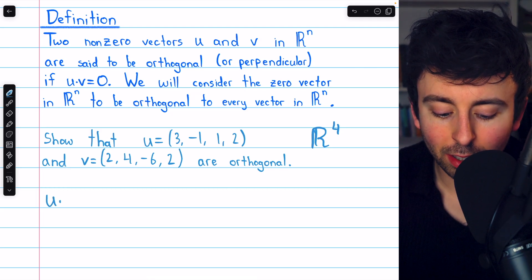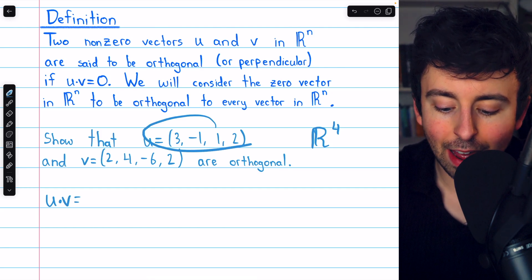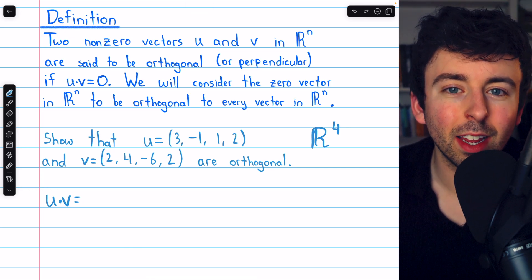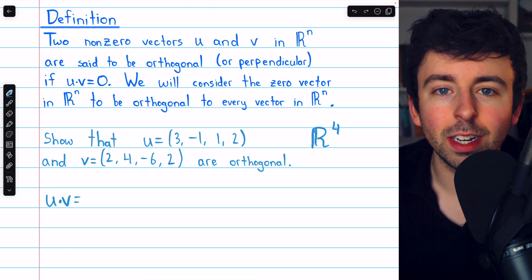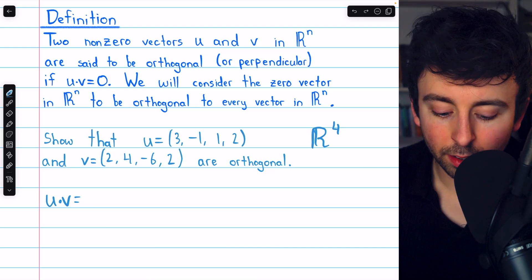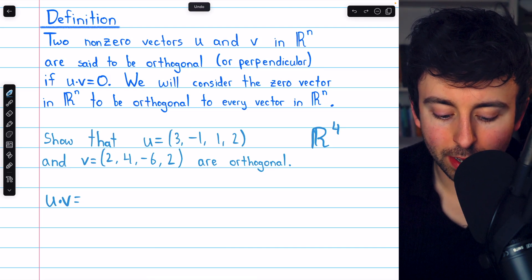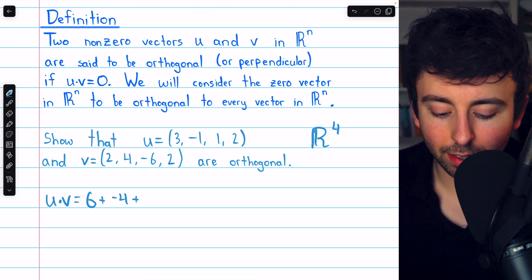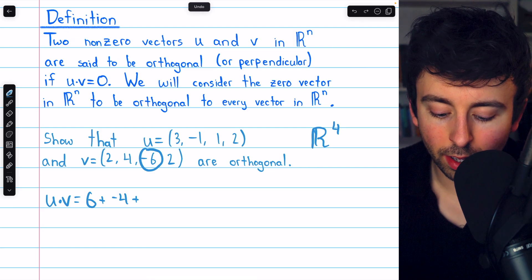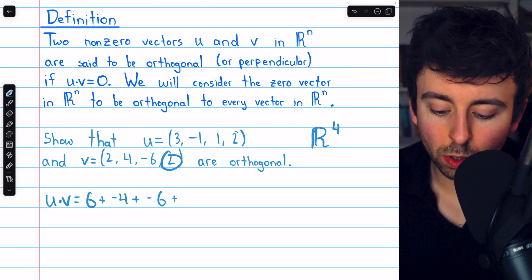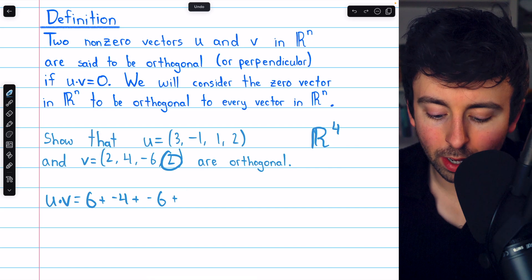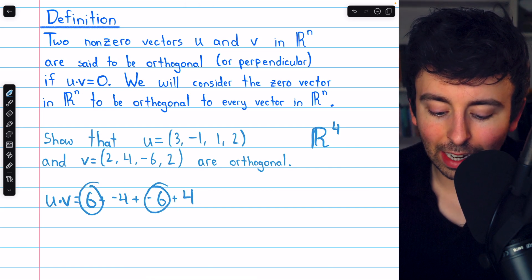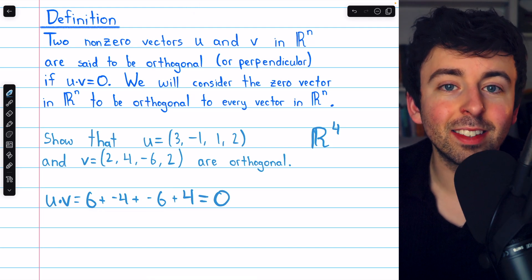All we have to do is calculate the dot product, u dot v. Since we have these in component form, we'll use the component form of the dot product. So just multiply corresponding components and add them together. So 2 times 3 will be 6, and then plus 4 times negative 1 will be negative 4, plus negative 6 times 1 is negative 6, plus 2 times 2 is 4. So adding these all together, the negative 4 and positive 4 cancel out, the 6 and negative 6 cancel out, we see the dot product is 0.